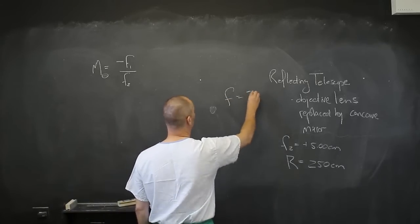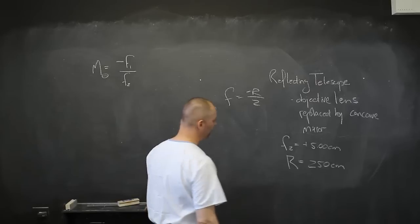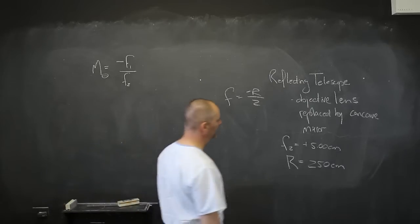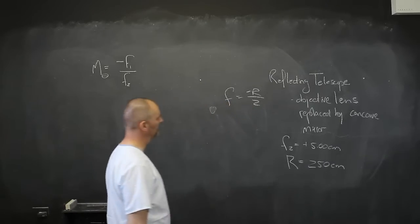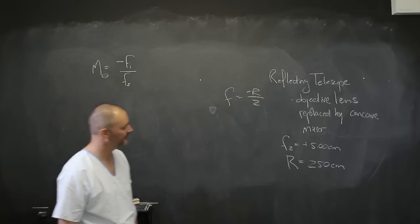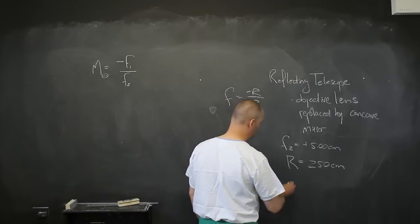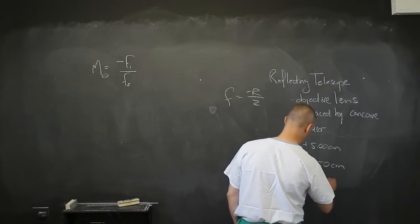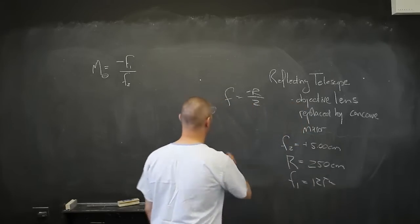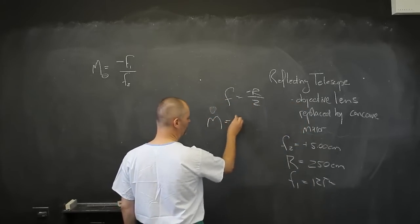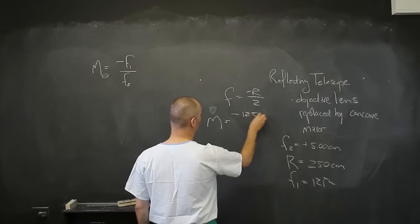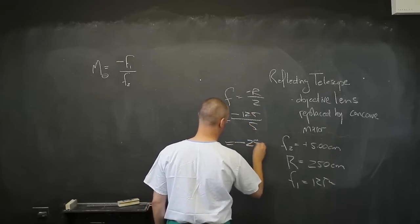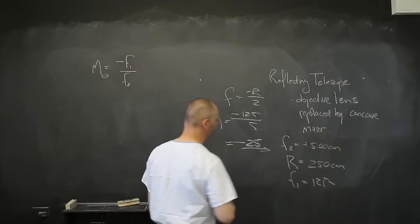Remember that f equals negative r over 2. That is going to give us a half of that which is 125. And we are going to replace that with the fact that f equals 125 centimeters. And now we are just going to have the magnification. It is going to be negative 125 divided by this 5, and that is going to be equal to negative 25.